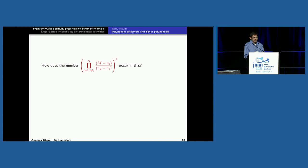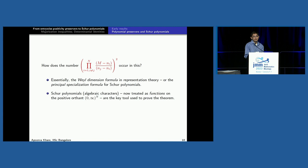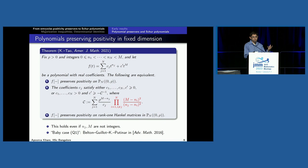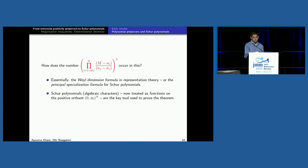So how does that red number occur in this? It shows up because it's essentially two applications of the Weyl dimension formula, one divided by the other. Or in symmetric function theory, it's two applications of the principal specialization formula for Schur polynomials. The key in proving that result — and coming up with the first examples of polynomials with negative coefficients that preserve positivity — was to use Schur polynomials, except we use them as functions. They're algebraic objects, but we use them as functions on the positive orthant to prove the theorem.